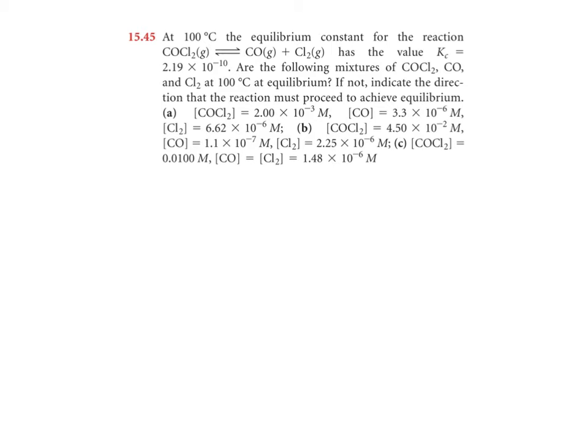Problem 45 here gets into our video on applications of the equilibrium constant looking at reaction quotients. So I'll just do part A here. For part A, it says that at 100 degrees Celsius, the equilibrium constant for the reaction, phosgene in equilibrium with carbon monoxide and chlorine gas, has the value k sub c equals 2.19 times 10 to negative 10. Are the following mixtures of phosgene, carbon monoxide and chlorine gas at 100 degrees Celsius at equilibrium? If not, indicate the direction that the reaction must proceed to achieve equilibrium.